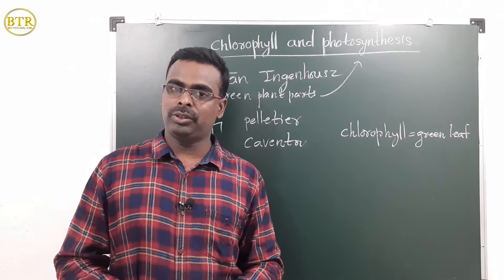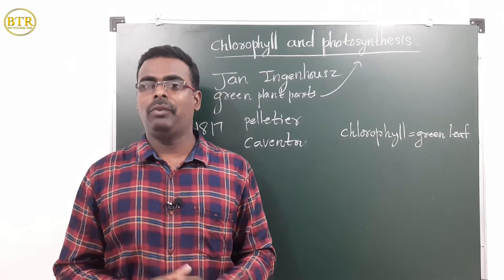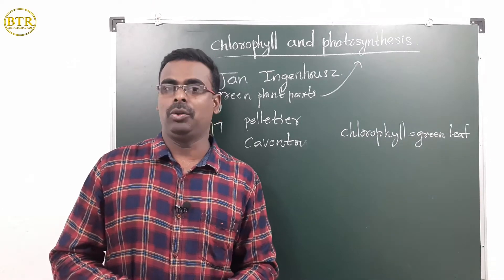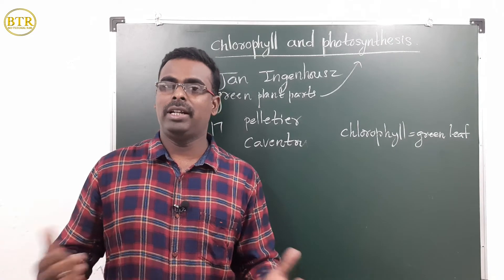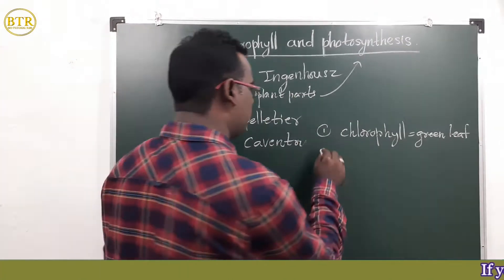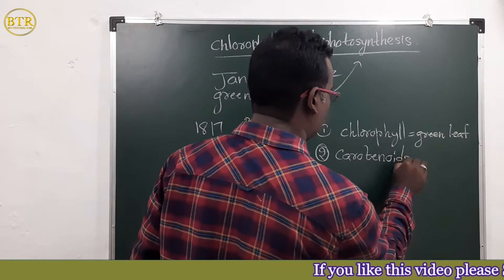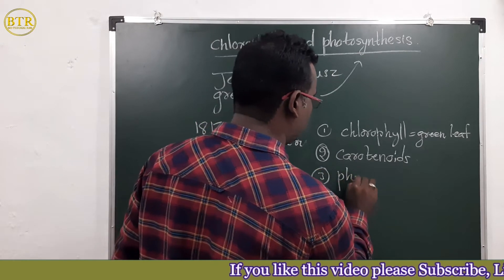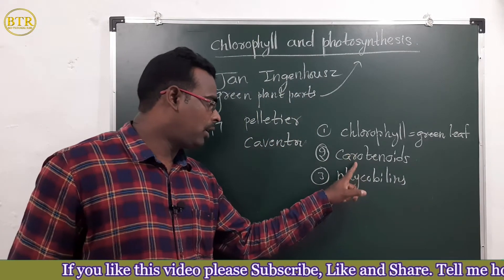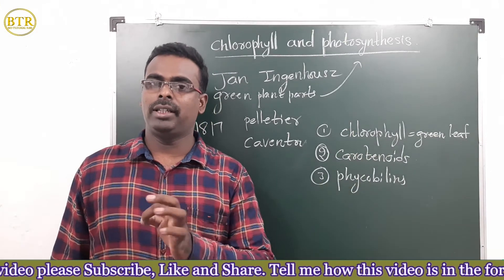But what about leaves present in different colors — do they also perform photosynthesis? Scientists found that there are different pigments present in leaves, which is why they appear in different colors. The three pigments are: chlorophyll, carotenoids, and phycobilins.